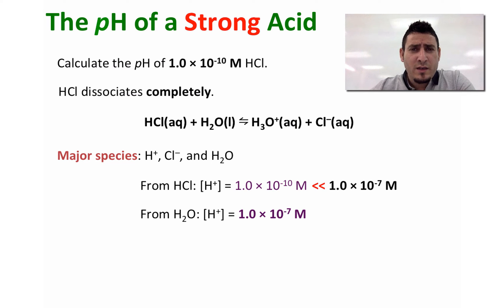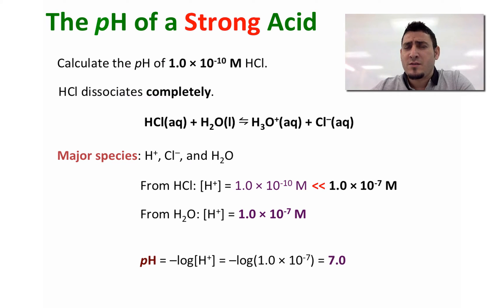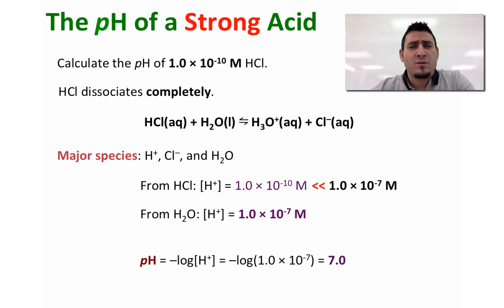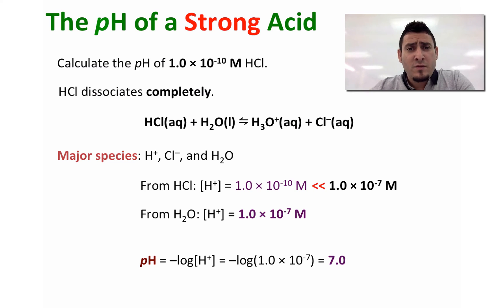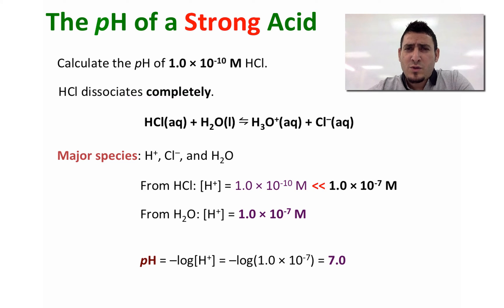We calculate the pH from the concentration of H⁺ coming from water, and therefore the pH is going to be equal to 7. So basically, even if you have a strong acid but at very low concentration, the aqueous solution will still be neutral.